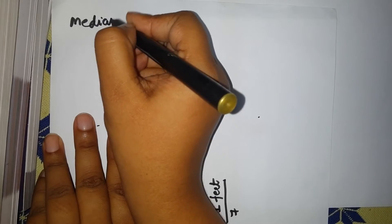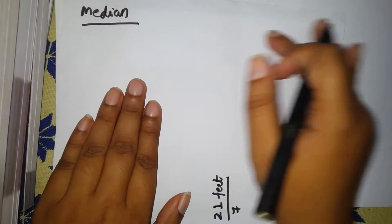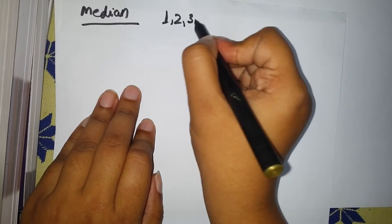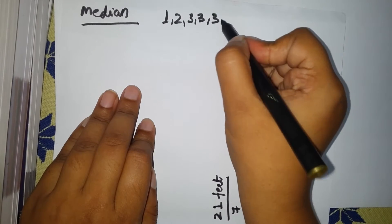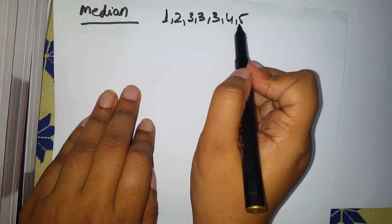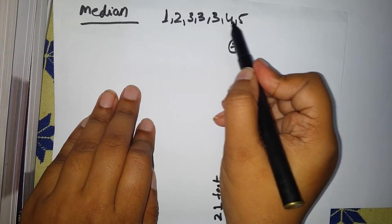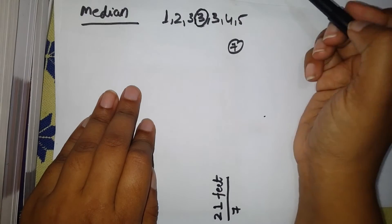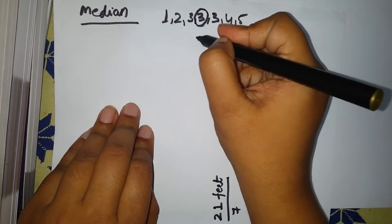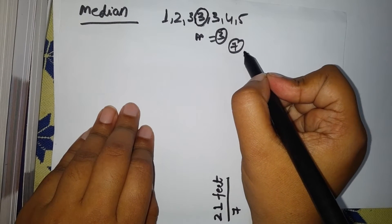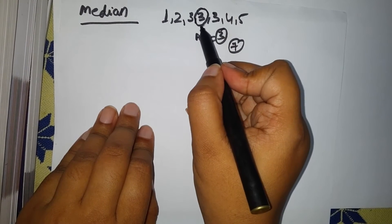Next, let me go to median. Median is the centermost value of any distribution — whether ascending or descending order. Take the same example: 1, 2, 3, 3, 3, 4, 5. There are seven values. Counting from both sides gives three as the center value. So the median for this distribution is three. This was easy because you have an odd number of values, so you can easily spot the center value.